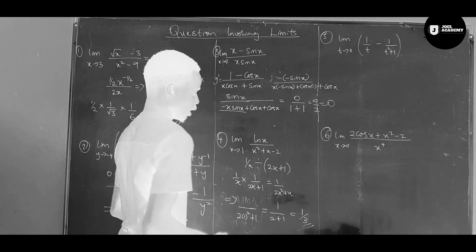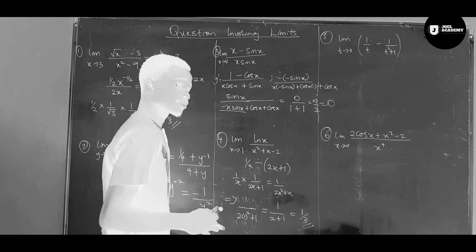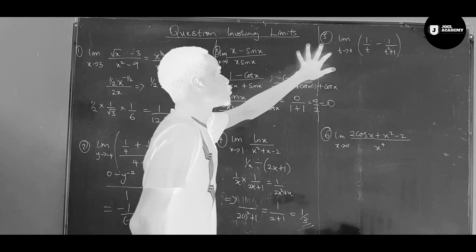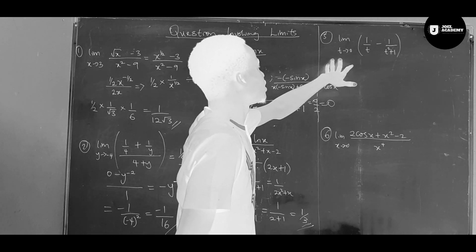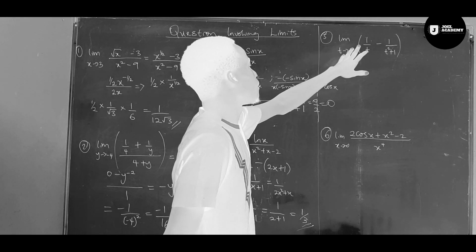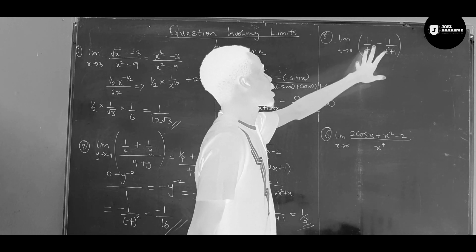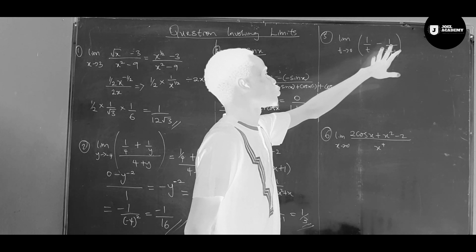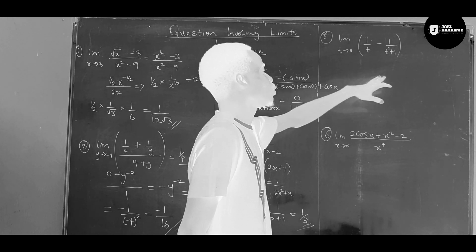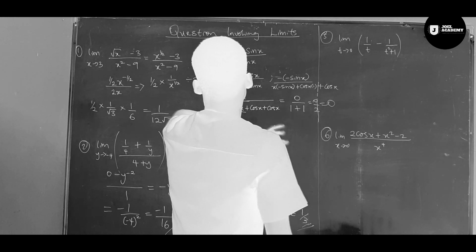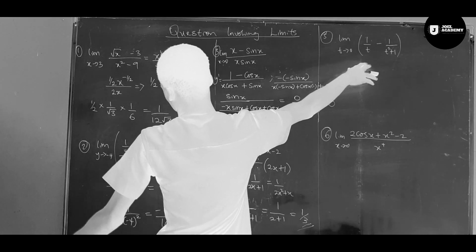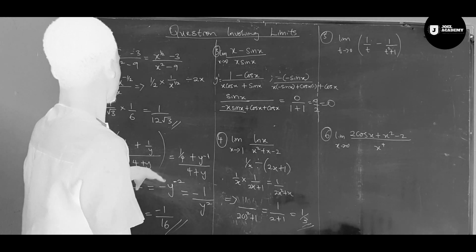So this is the answer for number four. And we have number five, which is given as the limit as x tends to zero, in bracket one over x minus one over two x plus one, in bracket. Now this looks like something we did here.